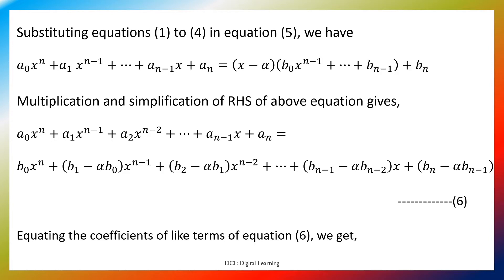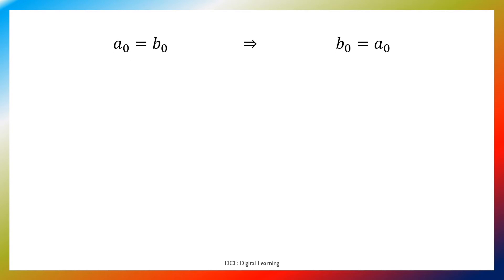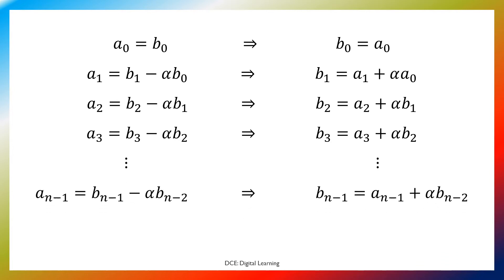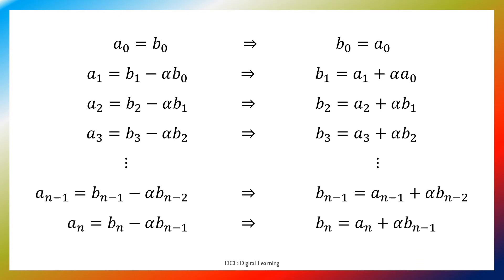Equating the coefficients of like terms of equation 6, we get: a0 equals b0, which implies b0 equals a0. a1 equals b1 minus alpha·b0, which implies b1 equals a1 plus alpha·a0. a2 equals b2 minus alpha·b1, which implies b2 equals a2 plus alpha·b1. a3 equals b3 minus alpha·b2, which implies b3 equals a3 plus alpha·b2. Continuing in the same way, a(n-1) equals b(n-1) minus alpha·b(n-2), which implies b(n-1) equals a(n-1) plus alpha·b(n-2). And an equals bn minus alpha·b(n-1), which implies bn equals an plus alpha·b(n-1).